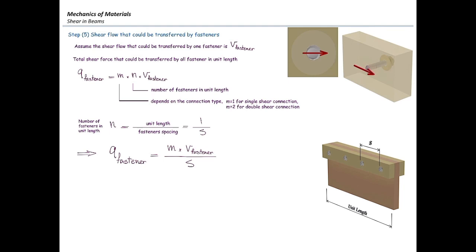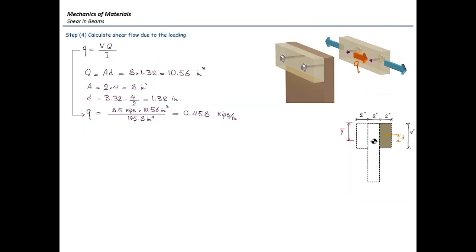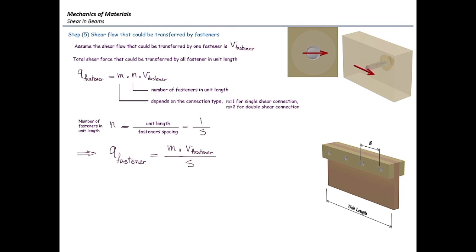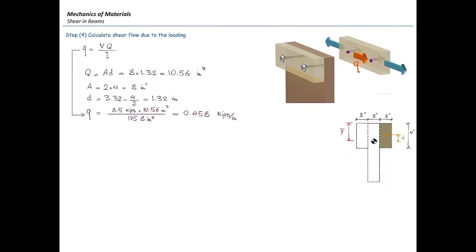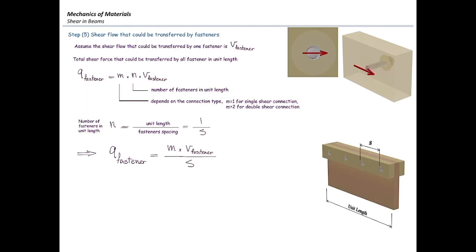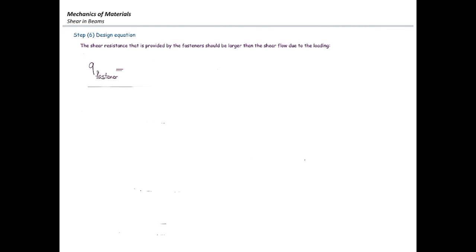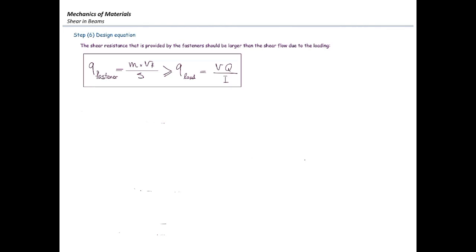We now compare two parameters: the shear flow due to applied load (VQ/I) and the resisting shear flow that can be transferred by the bolts (Q_fastener). For a safe design, the resistance must exceed the load, giving the design equation: Q_fastener ≥ VQ/I, or equivalently M × V_F / S ≥ VQ/I. This is the main design equation for built-up members, and we will use it to solve both cases in this problem.